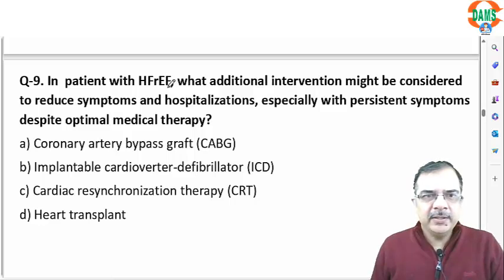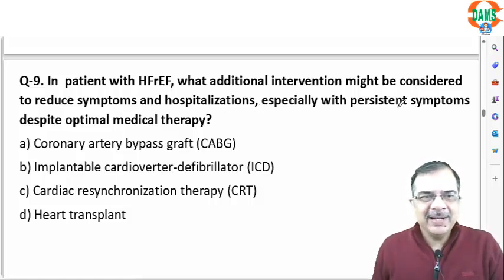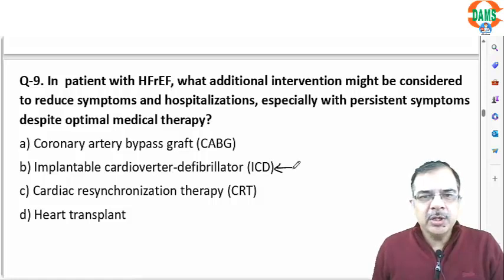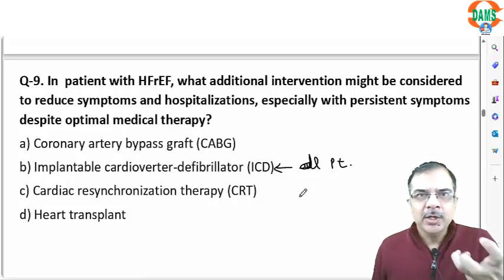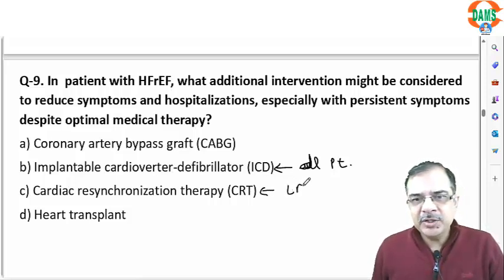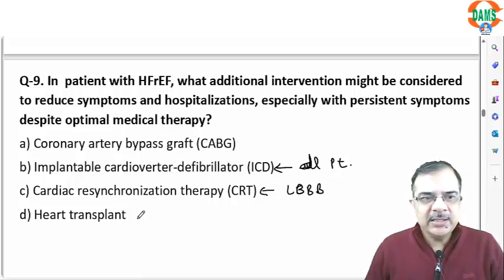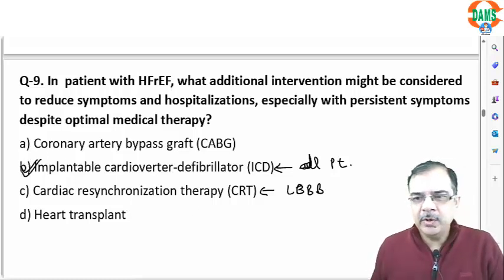Question 9: a patient with heart failure presents with symptoms despite optimal medical treatment. In this case, all eligible patients should undergo ICD device implantation — ICDs detect arrhythmias and deliver a DC shock, thereby preventing sudden cardiac death. Cardiac resynchronization therapy (CRT) is given additionally if left bundle branch block is present, causing synchronized contraction of both ventricles. Bypass is for ischemic heart disease; heart transplant is for end-stage heart failure. Answer is option B.